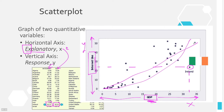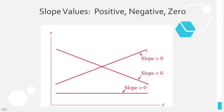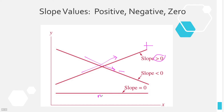We see that it increases from left to right, so part of the trend is positive — greater than zero. Whenever it's going uphill from left to right, it's positive. Whenever it's going downhill from left to right, it is said to be negative. And whenever it is flat, it is said to be no slope or zero slope.